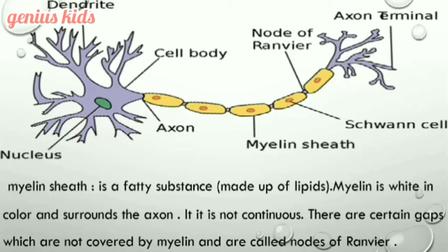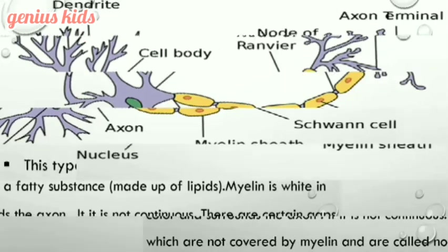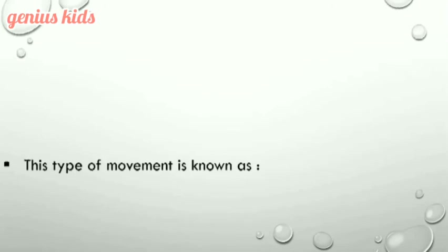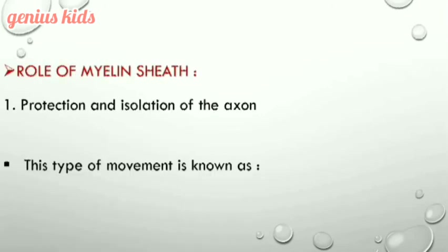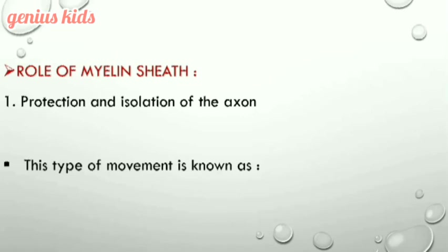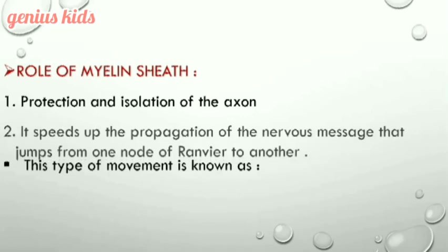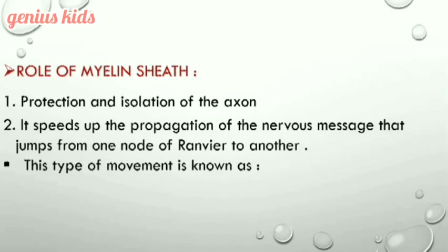Myelin is not continuous. The spaces between the myelin sheaths are called nodes of Ranvier. Myelin has two important roles: protection and isolation of the axon. It also speeds up the propagation of the nervous message, which jumps from one node of Ranvier to another.